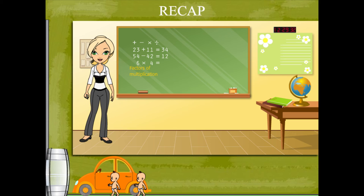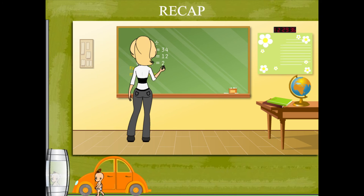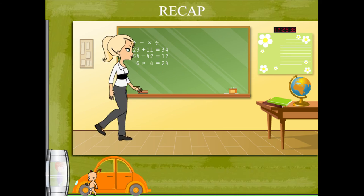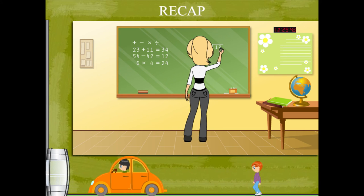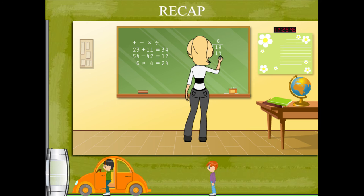She now writes 6 into 4. These are factors of multiplication, and the answer 24 is called the product of two factors.